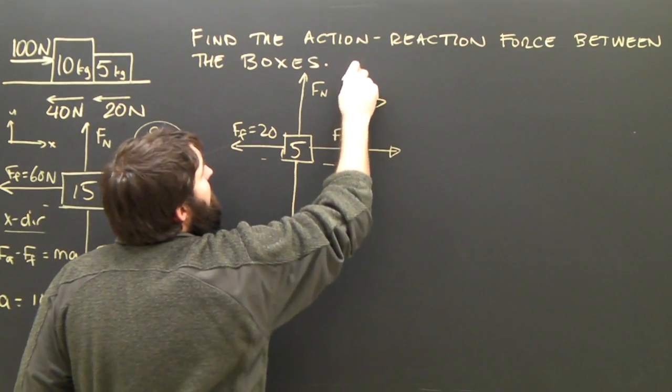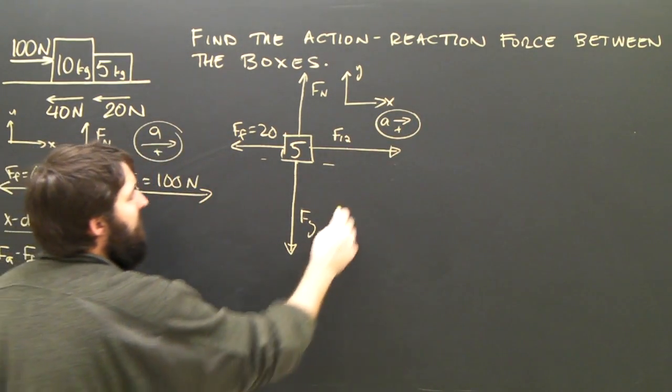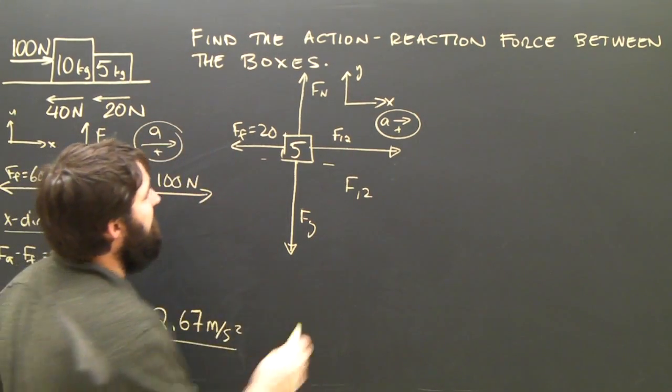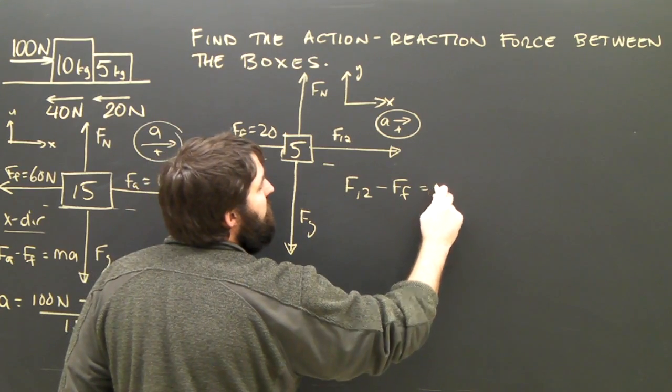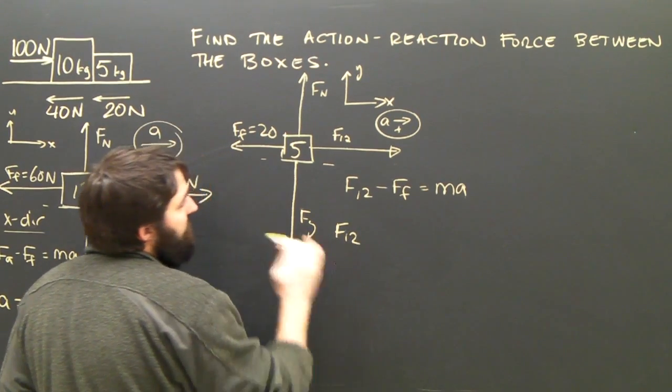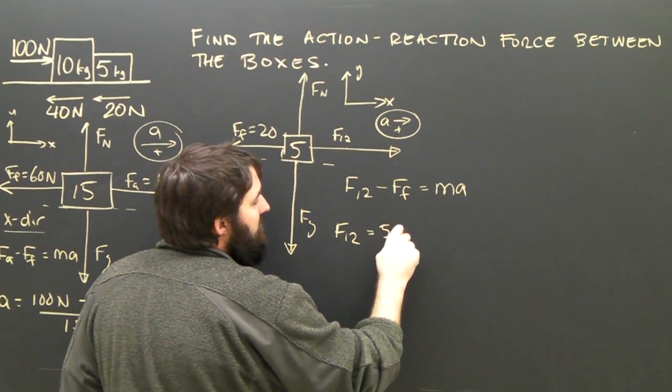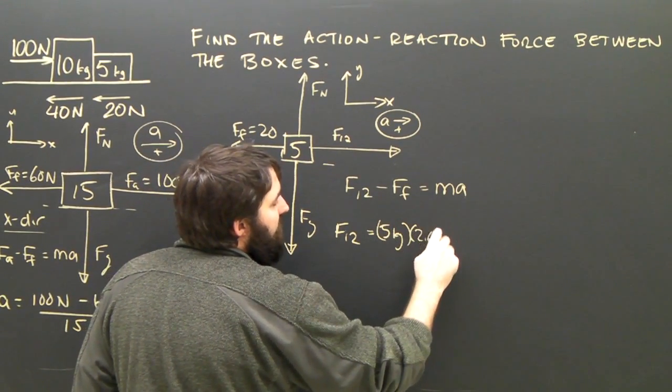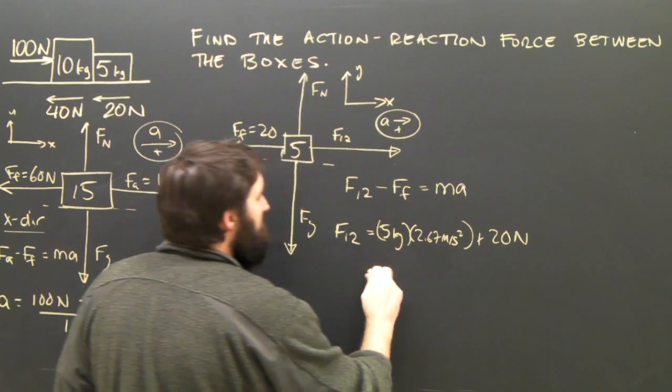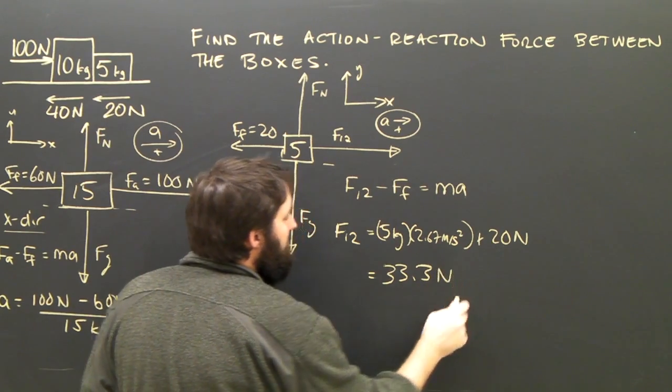So now, X is to the right because this thing is accelerating to the right. So I find, according to Newton's second law, that the force of the first box on the second minus the force of friction is equal to mA. We know A, we know M. We can find the action-reaction force. The force of the first box on the second box will be 5 kilograms times 2.67 meters per second squared plus 20 newtons, which is 33.3 newtons.